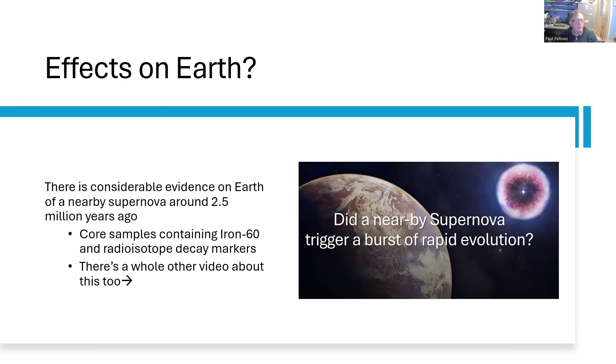The reason that we think this supernova occurred is we find in the sediments in the bottom of the ocean and in the bottom of Lake Tanganyika, you dig down through them and you take a core and you know the age of the core at different layers. And we find that around that 2.5 million years ago, there is a layer containing radioisotope markers from the iron-60 that is the radioactive form of iron that is prevalent in these sorts of exploding stars.